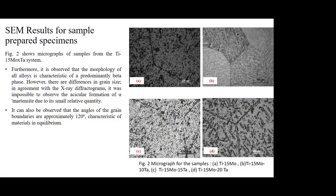For the SEM results of the prepared specimens, it is observed that the morphology of all alloys is characteristic of the beta phase, in agreement with the XRD results. It was impossible to observe other phases such as the alpha phase, which would have led to weakened mechanical properties due to their small relative quantity. It can also be observed that the angle of the grain boundary is approximately 120°, characteristic of a material in equilibrium.